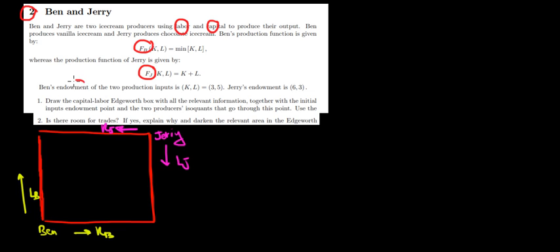Now we have the endowments of their production inputs. Ben has three units of capital and five units of labor, and Jerry has six units of capital and three units of labor.